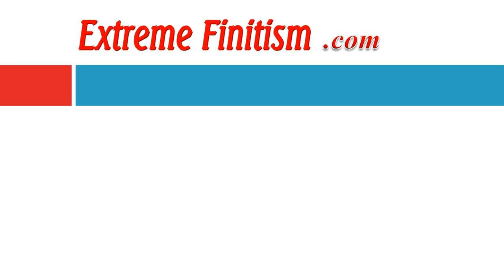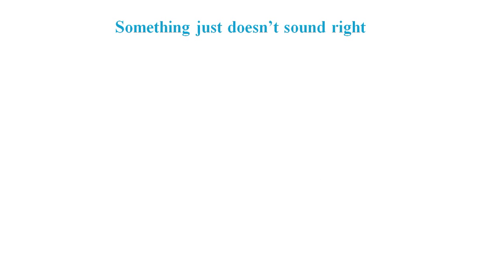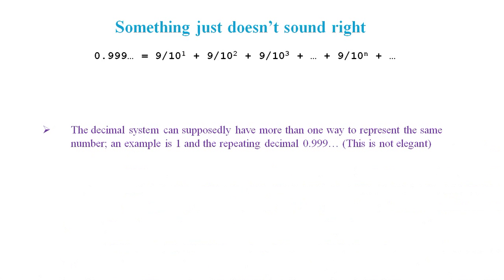This video is brought to you by ExtremeFinitism.com. Why 0.9 recurring does not equal 1. 0.9 recurring can be thought of as an endless series where each term corresponds to one of the digits, one of the 9's. The decimal system can supposedly have more than one way to represent the same number. So here, 0.9 recurring and 1 are supposedly the same number. This is far from the elegance we should expect from the decimal system, which is one of the fundamental systems in mathematics.